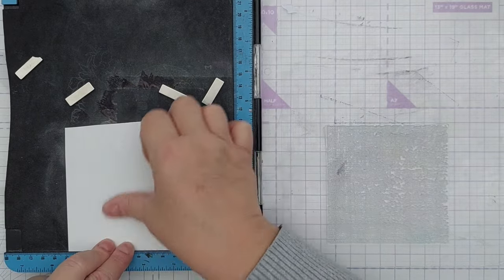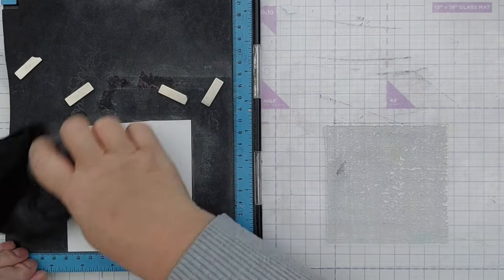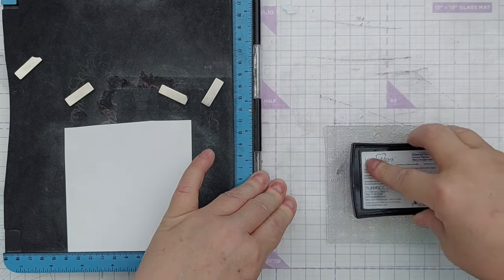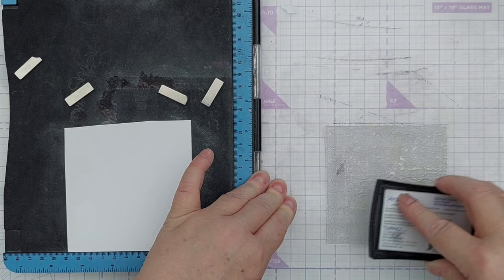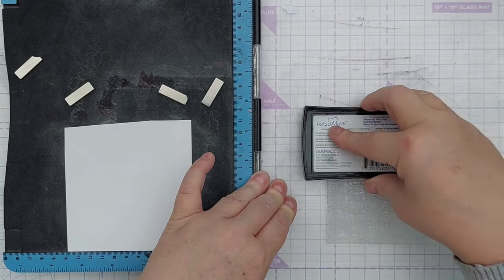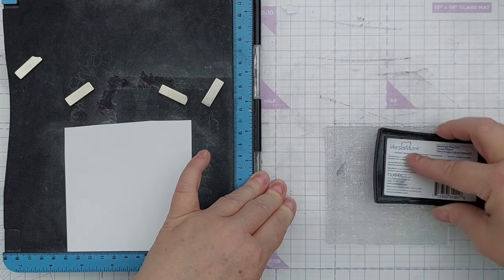I took a scrap of mixed media paper, popped it in my stamp positioner, put a bit of tape on the back to hold it in place, and then I stamped on it using Versamark sticky embossing ink and a linen texture mixed media stamp.